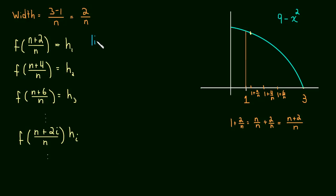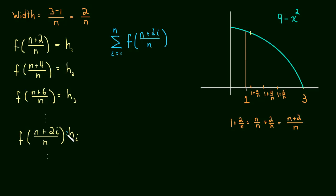Now we need to take the limit of the sum. Let's write out the sum first before taking the limit. The sum as i goes from 1 to n of the height f of n plus 2i over n times the width 2 over n. And we know we're taking the limit as the number of rectangles approaches infinity, so let's write that out now.